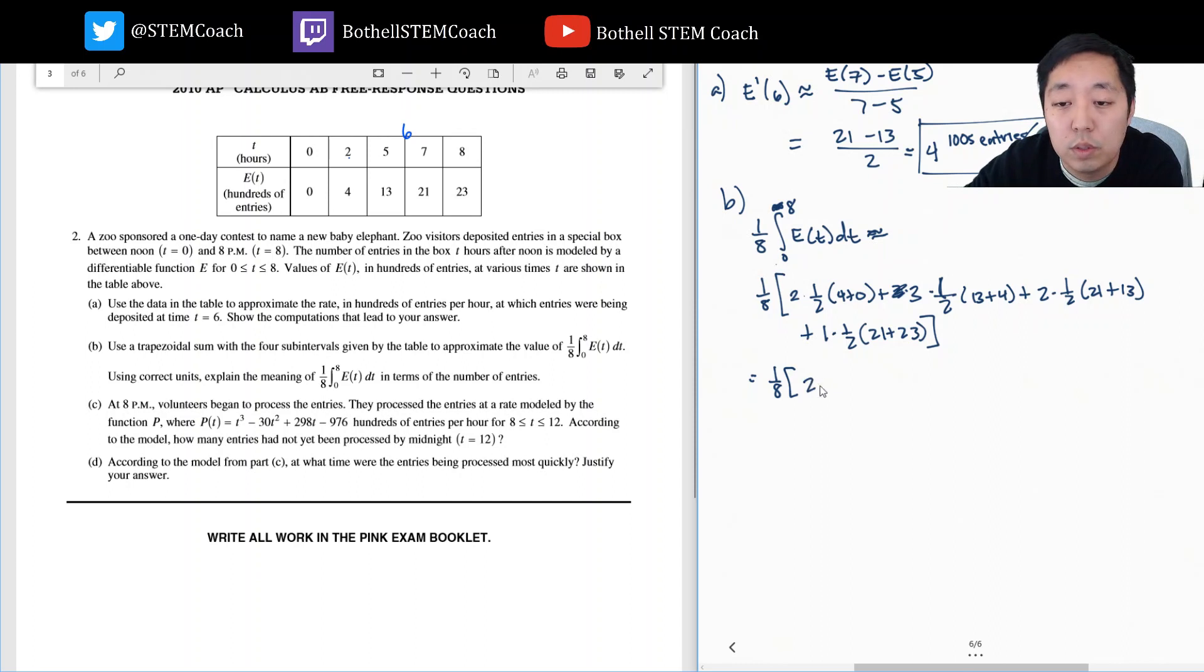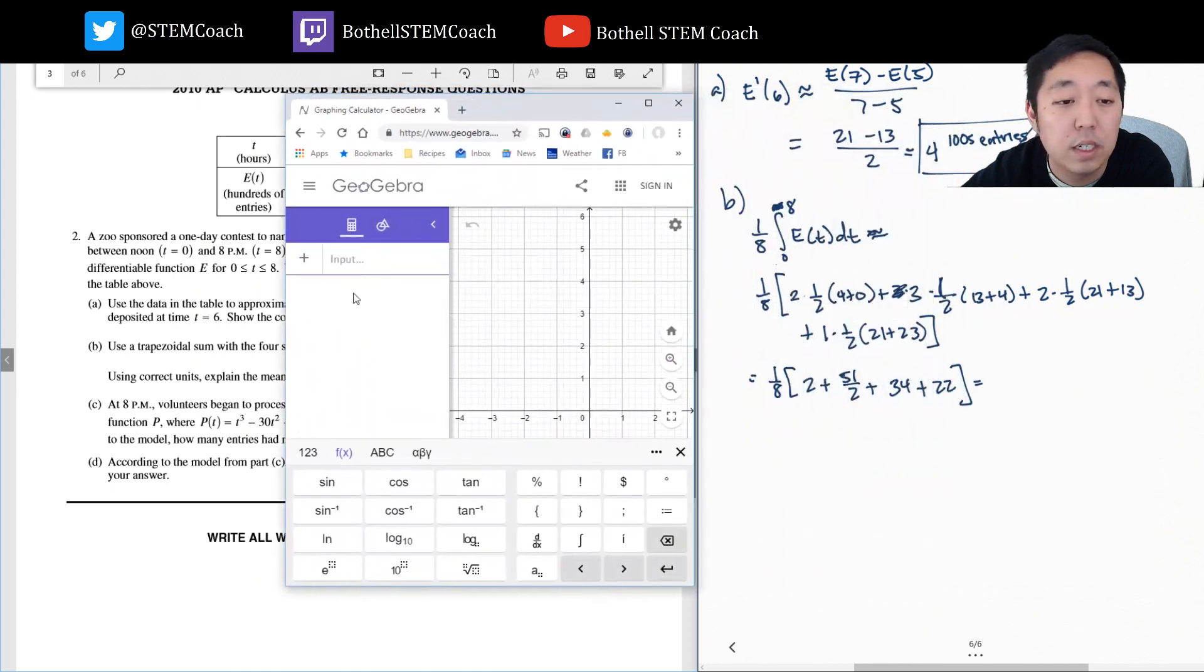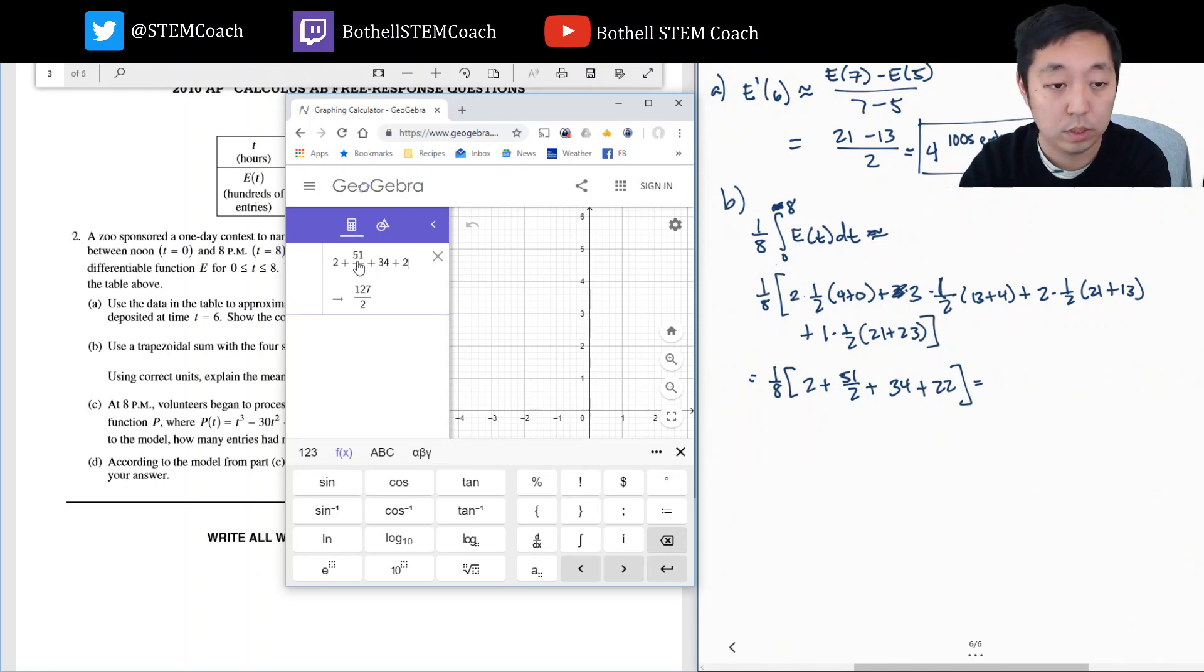This is what we do with the trapezoid rule. I average these two values and I multiply by the width. That's the area of the trapezoid. So this is one eighth times, I can't believe this is a calculator question, but that's fine. One, that's two plus, let's see, seventeen times three halves, fifty-one over two. Plus twenty-one plus thirteen is thirty-four, and one half of forty is twenty-two. I'll use a calculator for this. I'm gonna do two plus fifty-one over two plus thirty-four plus twenty-two divided by eight. One is sixty-seven over sixteen, you get ten point four three eight.